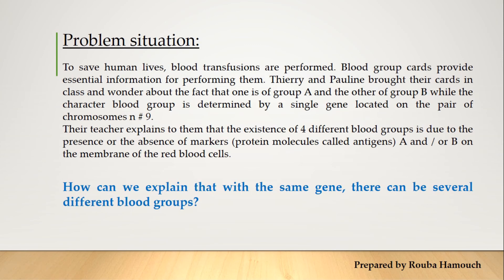Let's start our activity with a problem situation. To save human lives, blood transfusions — the transfer of blood from one person to another — are performed. Blood group cards provide essential information for performing blood transfusions. Each individual has his own blood group card, which is considered as a biological identity.